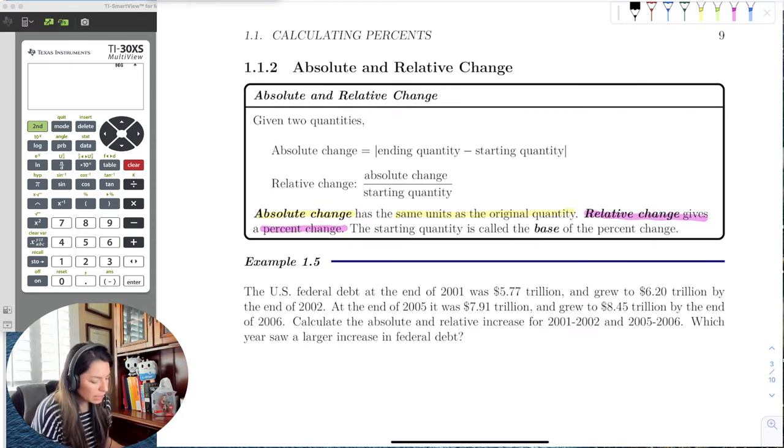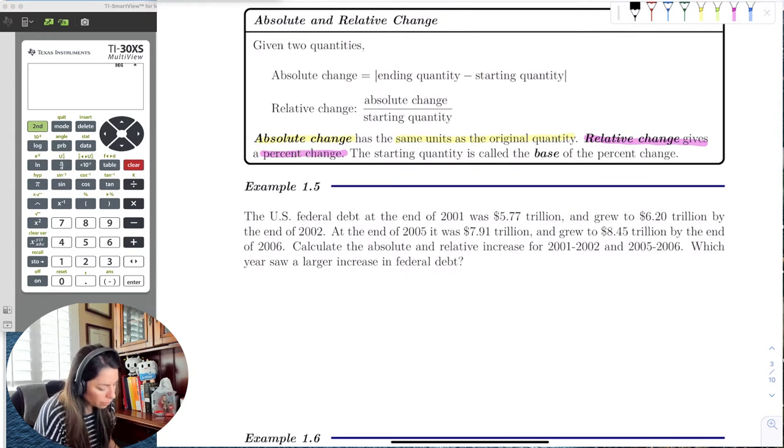OK, so this next example states that the U.S. federal debt at the end of 2001 was $5.77 trillion, and grew to $6.2 trillion at the end of 2002. At the end of 2005, it was $7.91 and grew to $8.45 trillion by the end of 2006. Calculate the absolute and relative increase between these two different years, and which saw a larger increase. So we have two pieces, right? We have the first piece here from 2001, 2002, and then 2005 to 2006.